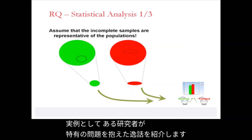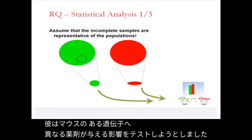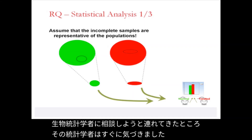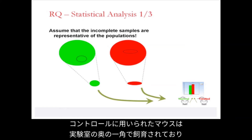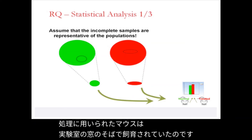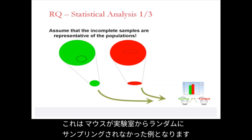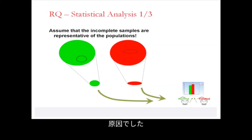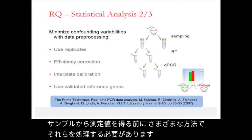One illustrative anecdote involves a researcher who had a peculiar problem. He wanted to test the effect of different drugs on a particular gene in mice, but he always got significant results no matter what drug he tested. A biostatistician brought in as a consultant quickly noticed that the negative control mice were always bred in a cage in the back corner of the lab, whereas the treated mice were always bred in a cage near the window. This is an example where mice were not randomly sampled, and the observed effect was due to an undesired systematic sampling bias rather than a real treatment effect.